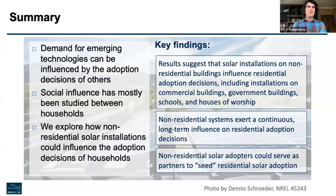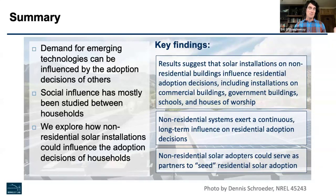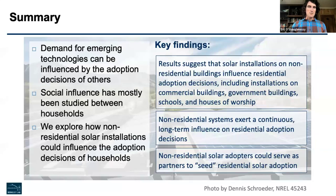The context for this is that demand for emerging technologies can be influenced by the decisions of others. A very easy way to think about this is that adoption can be contagious — that's the headline-grabbing way people describe rooftop solar. We became curious about whether residential adoption decisions can be influenced by systems installed on non-residential buildings.